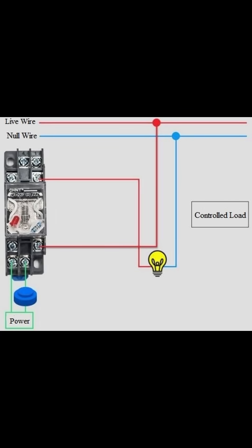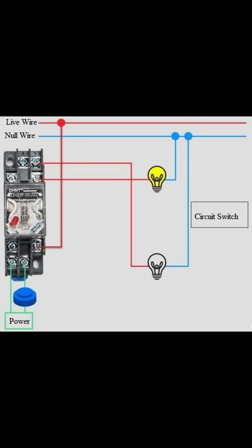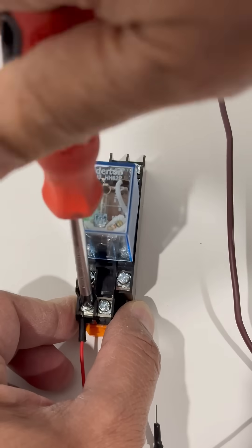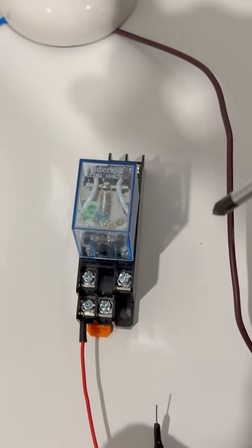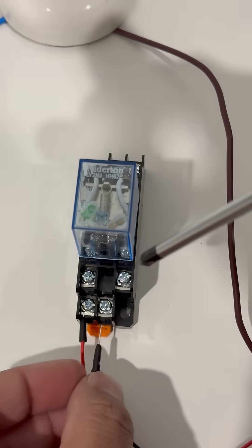In our setup, the coil is powered by a 12-volt DC supply. One bulb is connected through the normally closed contact, meaning it stays on when the relay is off. The second bulb is wired through the normally open contact, so it only lights up when the relay is powered.